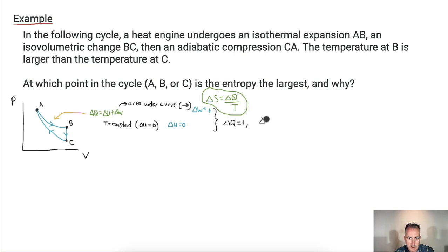So when I do this plus this, what do I end up with? The conclusion is that delta Q must be positive. Therefore, delta S goes up. In other words, the entropy goes up. My conclusion is that from A to B, the entropy increases here.